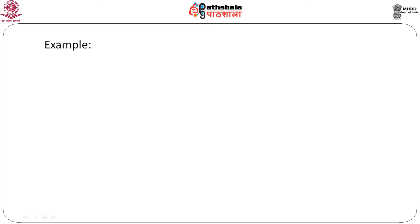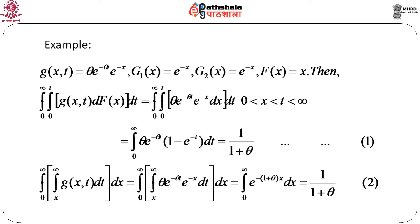To illustrate Fubini's Theorem, suppose g(x, t) = θ e^{-θt} · e^{-x}. We can take G₁(x) = θ e^{-x} and G₂(x) = e^{-x}, with F(x) = x. When x ranges from 0 to t and t ranges from 0 to ∞, the integration region can be expressed as 0 < x < t < ∞, meaning when t is fixed, x lies in [0, t], and when x is fixed, t lies in [x, ∞).